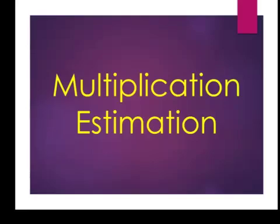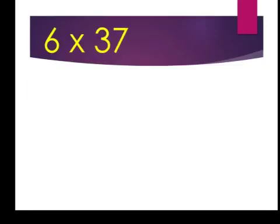This lesson is about using our rounding skills to estimate the answer to multiplication problems. Our first example is 6 times 37. Now, I don't need an exact answer, but I do want to get an estimate. And in order to get an estimate, we're going to use easier numbers than those that are listed there.